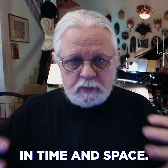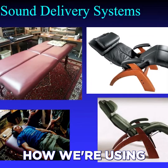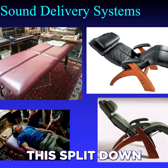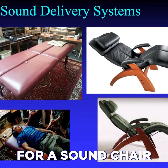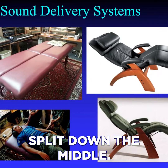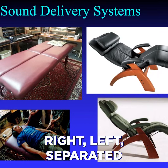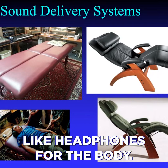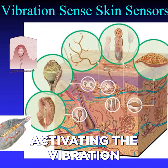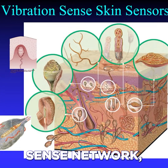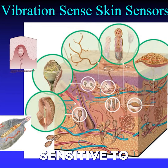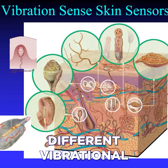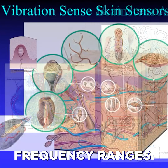That's how we're using this split-down-the-middle design for a sound chair or sound table — split down the middle, right-left separated like headphones for the body — activating the vibration sense network, which involves skin sensors sensitive to different vibrational frequency ranges.